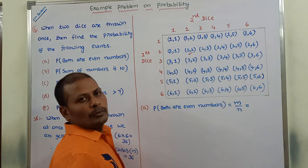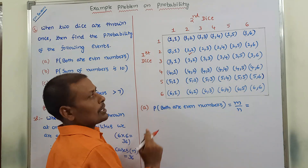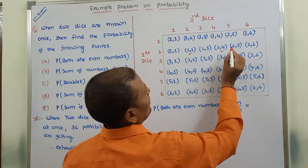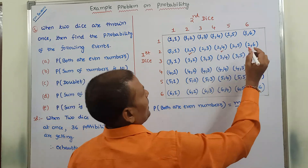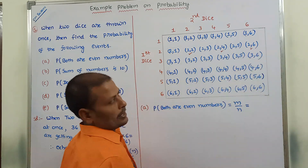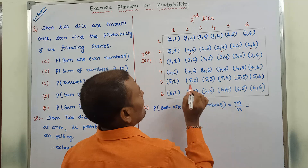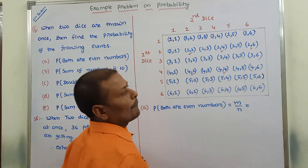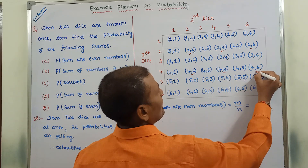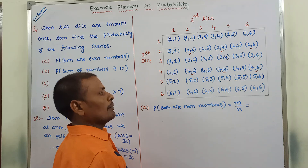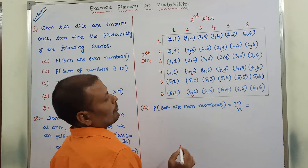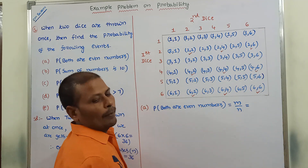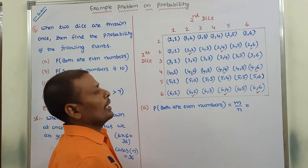The favorable cases where both coordinates are even numbers are: 2 comma 2, 2 comma 4, 2 comma 6, 4 comma 2, 4 comma 4, 4 comma 6, 6 comma 2, 6 comma 4, 6 comma 6. All of these have both coordinates as even numbers.